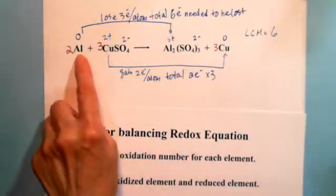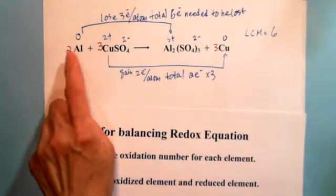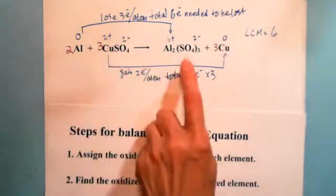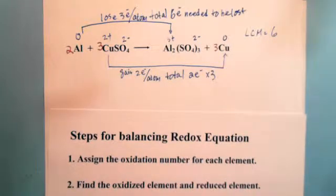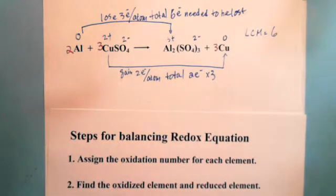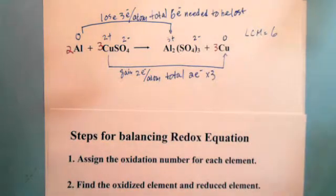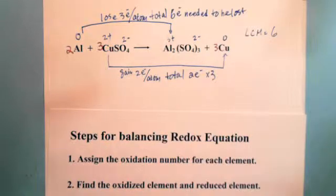Now just check the number of each element: two aluminum on the left, two aluminum on the right; three copper on the left, three copper on the right; three SO₄ on the left, three SO₄ on the right — it's balanced. So the balanced redox equation requires us not only to balance the number of atoms but also the number of charges. This follows the conservation of mass and the conservation of charge — charges are never created or destroyed, and atoms are never created or destroyed.